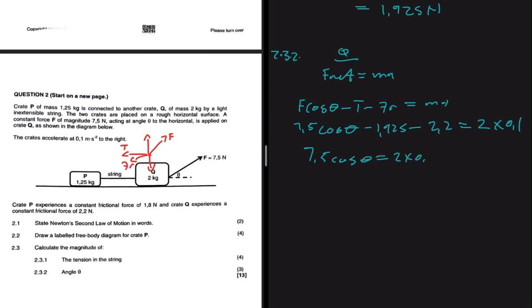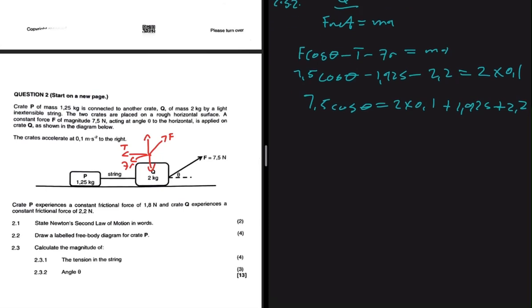So 7.5 cos theta equals 2 multiplied by 0.1 plus 1.925 plus 2.2. We're making cos theta the subject of the formula. So theta will be equals to cos arc of 2 multiplied by 0.1 plus 1.925 plus 2.2, everything divided by 7.5.